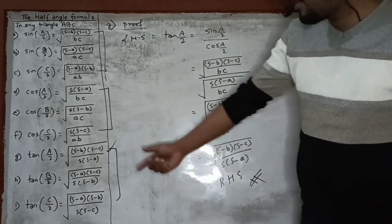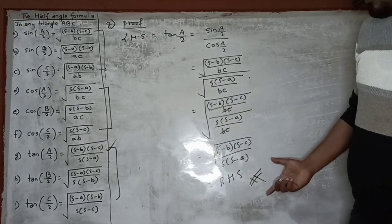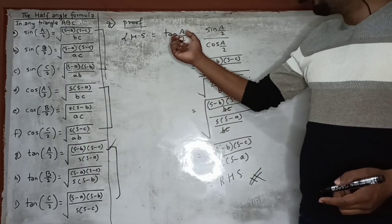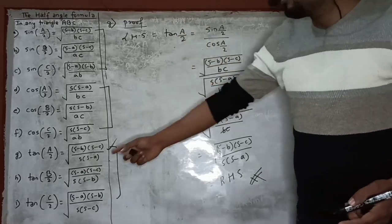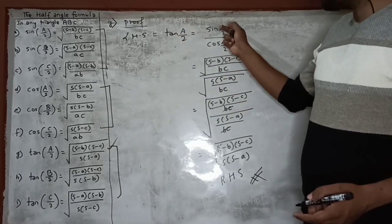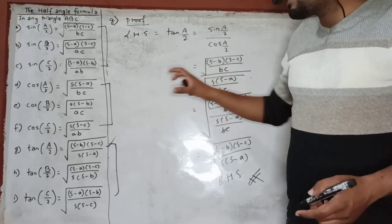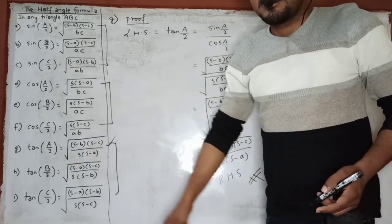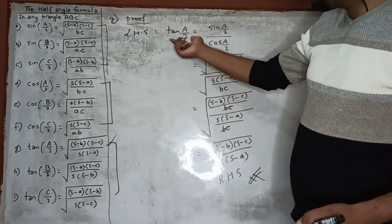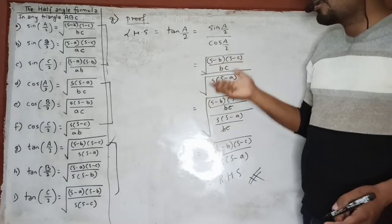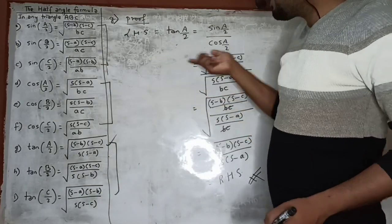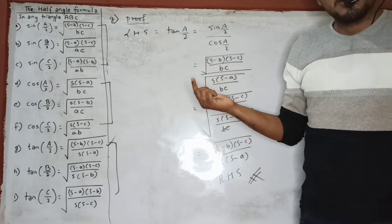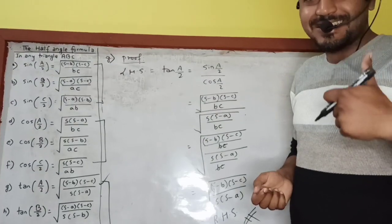Similarly, for statement H: write tan(B/2) = sin(B/2) / cos(B/2) and put in the values from the previously proved statements. For statement I: tan(C/2) = sin(C/2) / cos(C/2), and similarly substitute the sin(C/2) and cos(C/2) values to get the answer. Hope you enjoyed the video. Thank you.